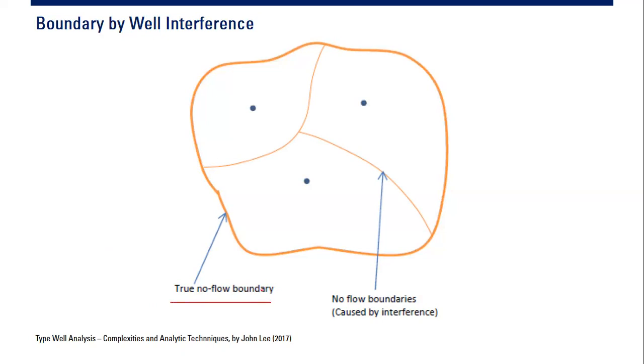That's no brainer, that's easy. But you can see this is interesting - this is no-flow boundary but caused by interference. It's a no-flow boundary, yes, but it's not structural, it's not stratigraphic. Instead, you can call it virtual boundary. This is virtual no-flow boundary established because of well interference.